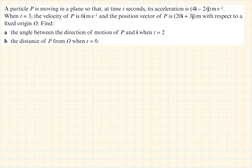A particle P is moving in a plane so that at time t seconds its acceleration is 4i minus 2tj metres per second squared. When t is equal to 3, the velocity is 6i metres per second and the position vector of P is 20i plus 3j metres. So here at time 3 seconds we have two things given: the velocity at that point and the position vector.